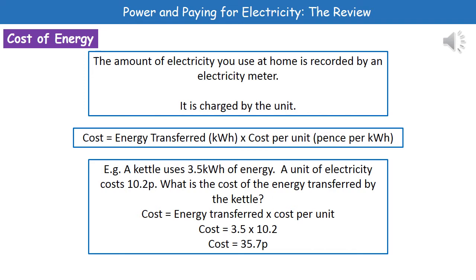The third calculation flows very nicely from the second, and this is to work out the cost of the energy. In your home you will have an electricity meter recording how much electricity you're using, and the electricity company charges you by the unit. The calculation is: cost equals the energy transferred times by the cost per unit. In the question they will always tell you the cost per unit, so you only need to work out the energy transferred. For example, a kettle uses 3.5 kilowatt hours of energy and the unit costs 10.2 pence — so 3.5 times 10.2 gives us 35.7 pence.